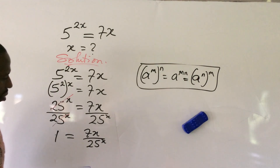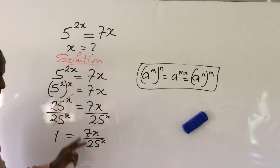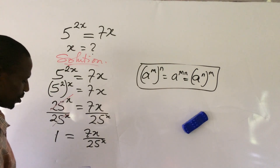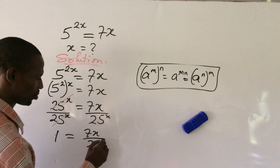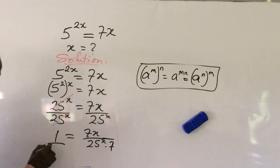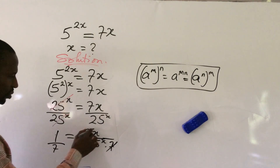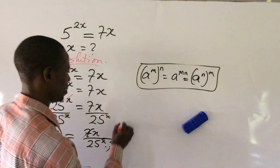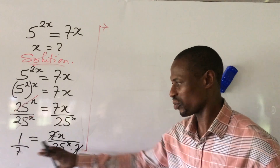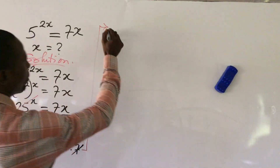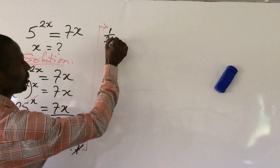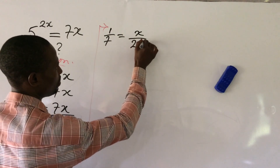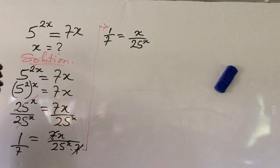Now I want to divide through by 7 so that all the constant terms are on one side. If we divide by 7, the equation becomes: 1 over 7 equals x all over 25 to the power of x.